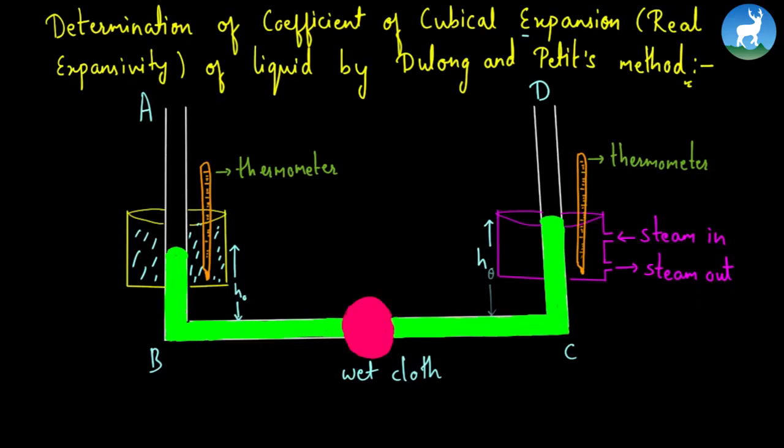To measure the cubical expansivity, we use this apparatus, the Dulong and Petit's apparatus.